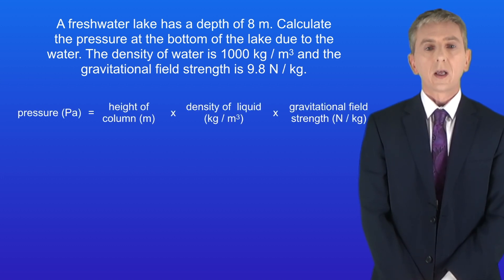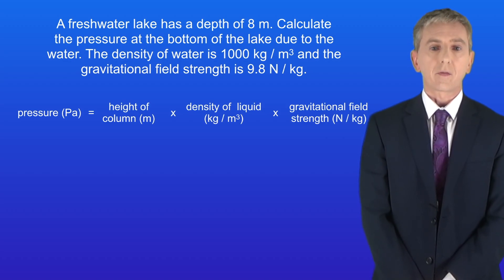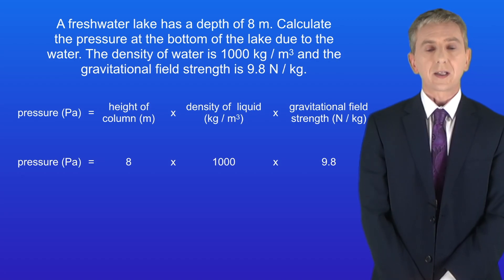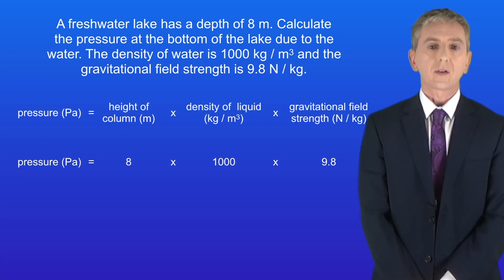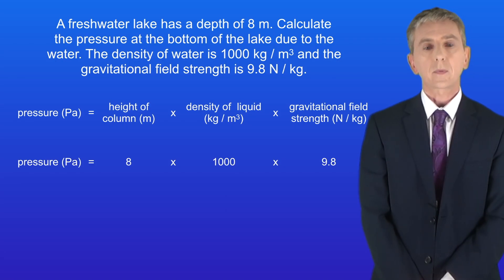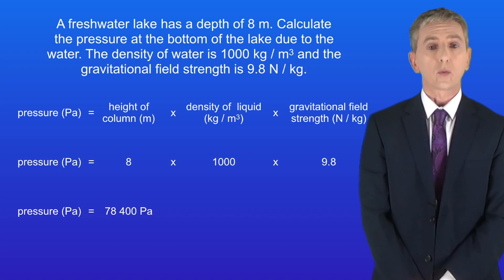Here's the equation: pressure equals the height of the column multiplied by the density of the liquid multiplied by the gravitational field strength. The height of the column — in other words the depth of the lake — is 8 meters. The density of fresh water is 1000 kilograms per meter cubed and the gravitational field strength is 9.8 newtons per kilogram. Putting these numbers into the equation gives us a pressure due to the water of 78,400 pascals.